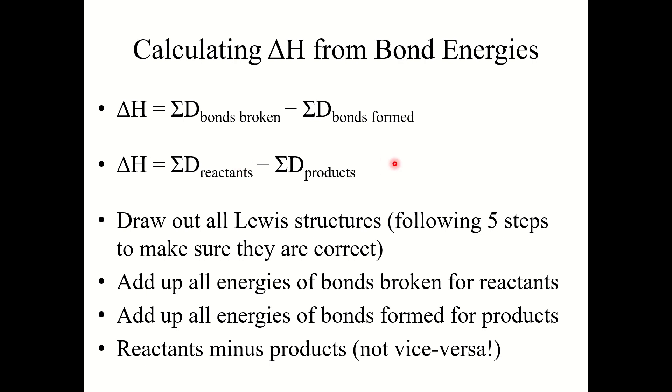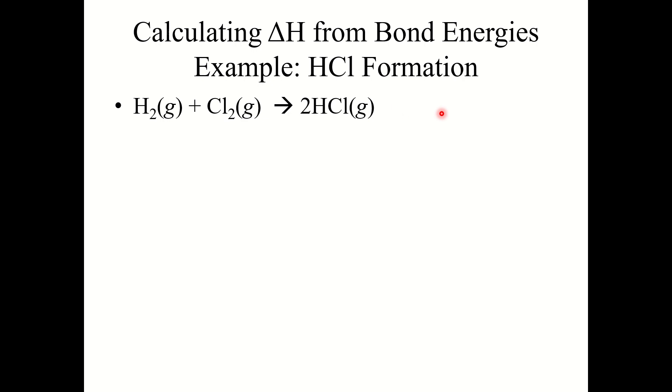To do these problems, first draw out all Lewis structures. Make sure you're following the five steps to ensure they are correct. Then add up all the energies of the bonds broken from the reactants, add up all the energies of the bonds formed from the products, and do reactants minus products. This is going to trip people up on the exam. When you use delta H values from section 9.3, it is products minus reactants. When you use bond energies, it is reactants minus products.